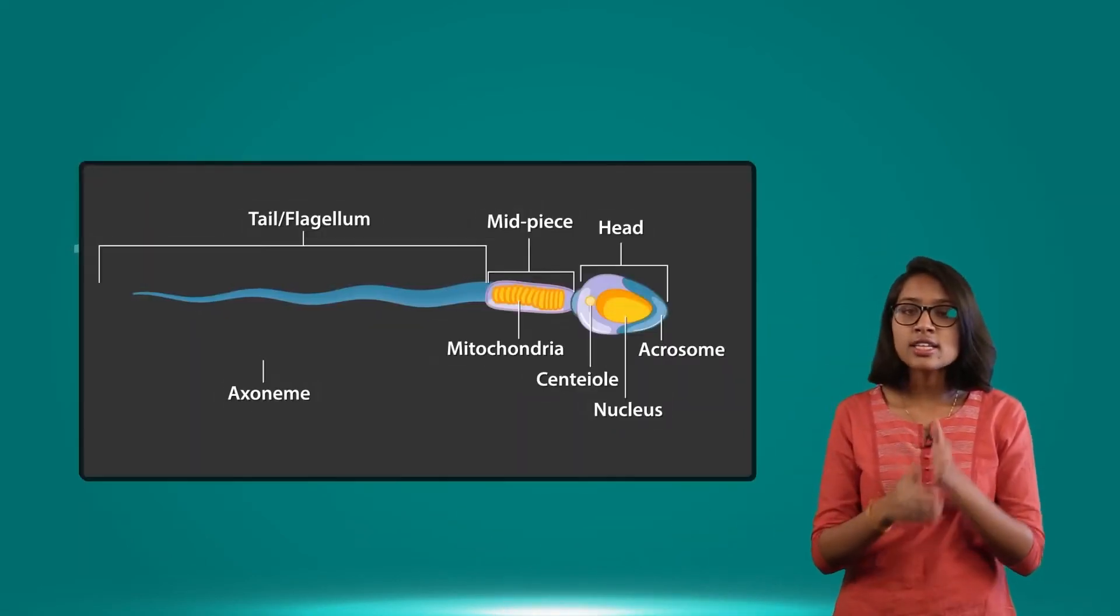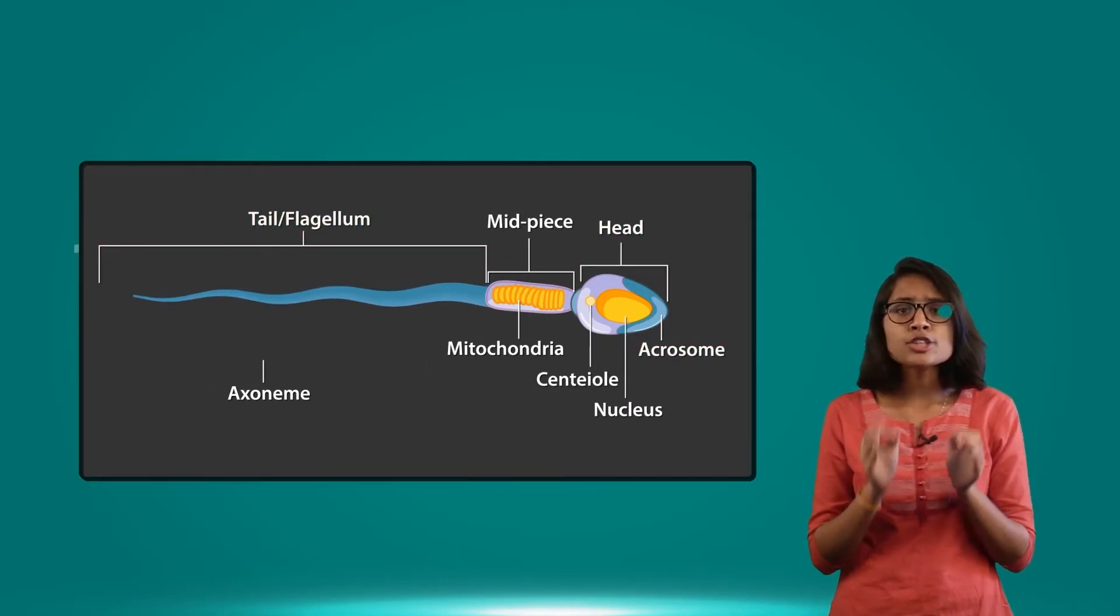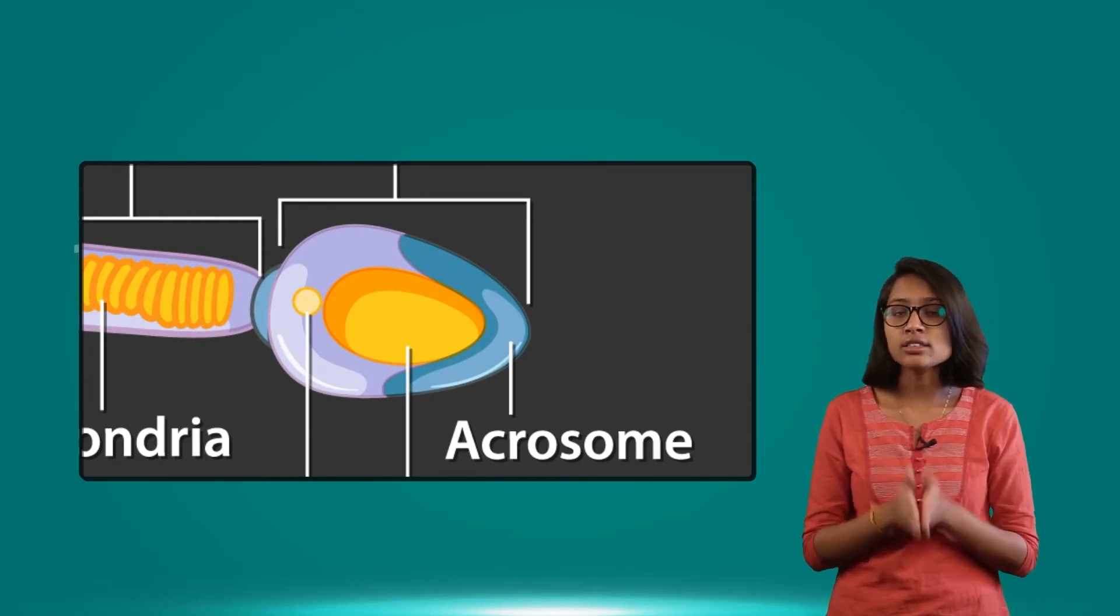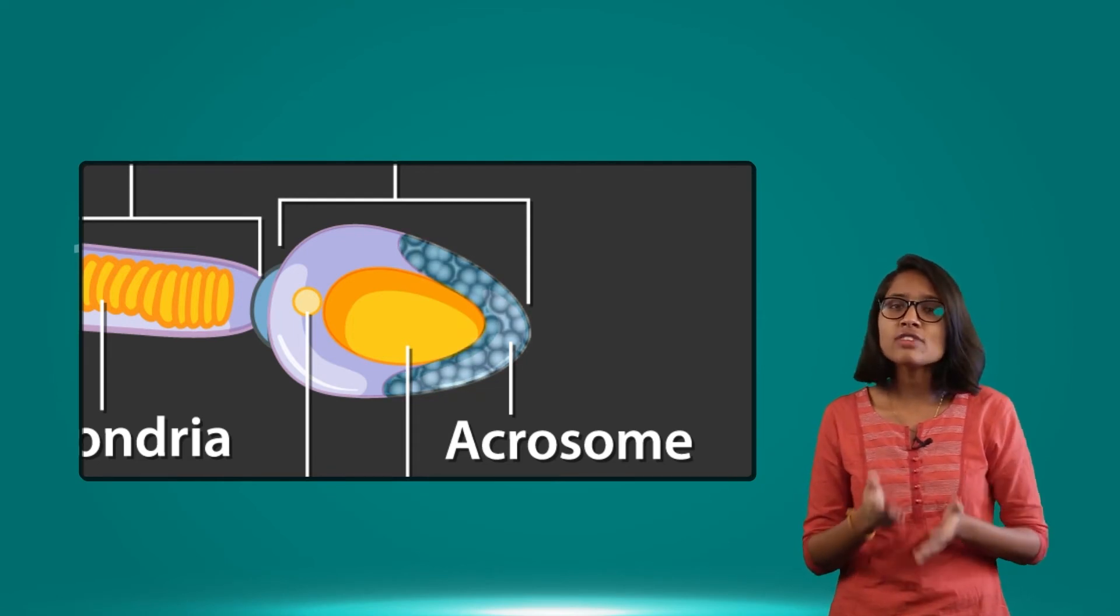The sperm has an acrosome, a head, and a tail. When you zoom into the structure of this acrosome, it contains a fluid-like substance. This fluid contains many enzymes. What is the function of these enzymes?